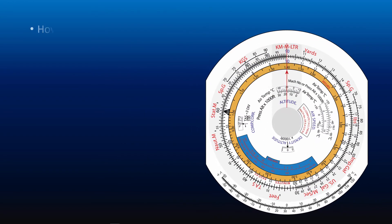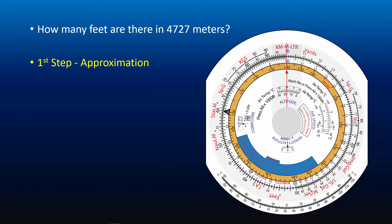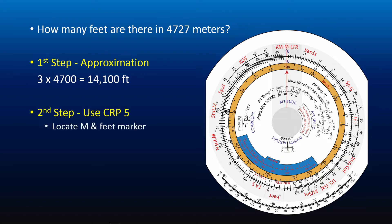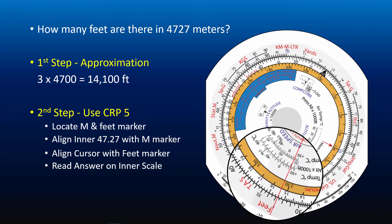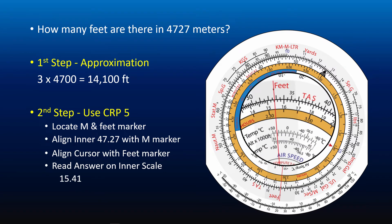Now let's take a look at an example. How many feet are there in 4,727 meters? The first step is to find an approximation. 1 meter equals 3.28 feet, so for approximation we take 1 meter equal to 3 feet. For 4,727 meters, we round to 4,700 meters. Thus the approximate value is 3 times 4,700 equals 14,100 feet. The second step is to align 47.27 with the M marker, then align the cursor with the feet marker, and read off the answer on the inner scale: 15.41. The approximate value is in the region of 10,000, so 4,727 meters equals 15,410 feet.